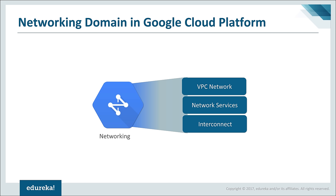Moving on to the networking domain, inside networking you have three kinds of services: VPC Network, Network Services, and Interconnect. The VPC Network is basically a cloud network given by Google Cloud. If you have two VMs deployed on Google Cloud and you want them to talk to each other, they have to be included inside one VPC — a virtual network created around those servers so they can communicate.